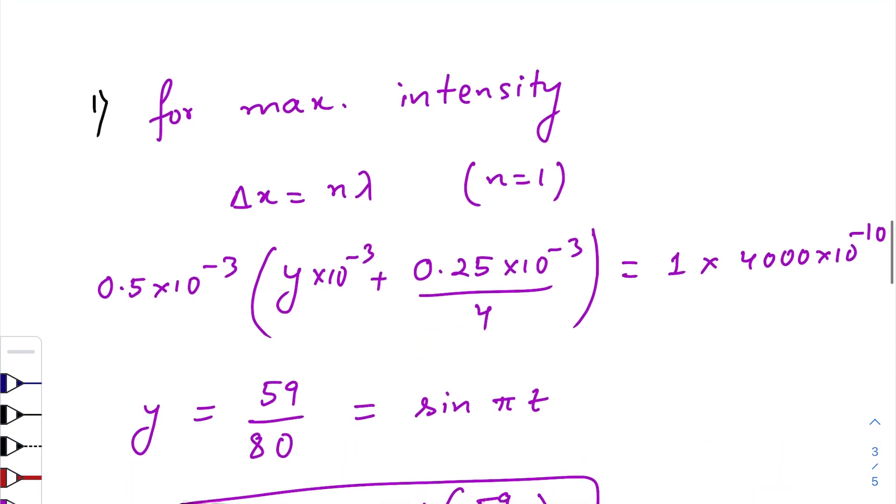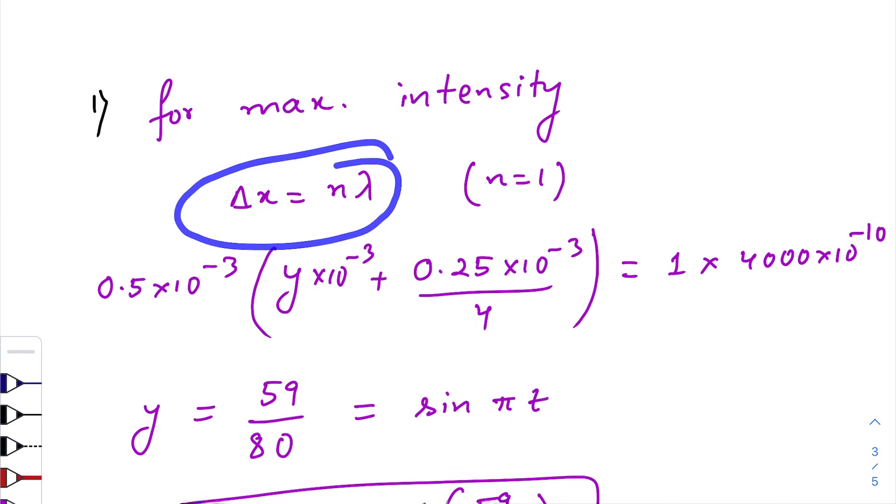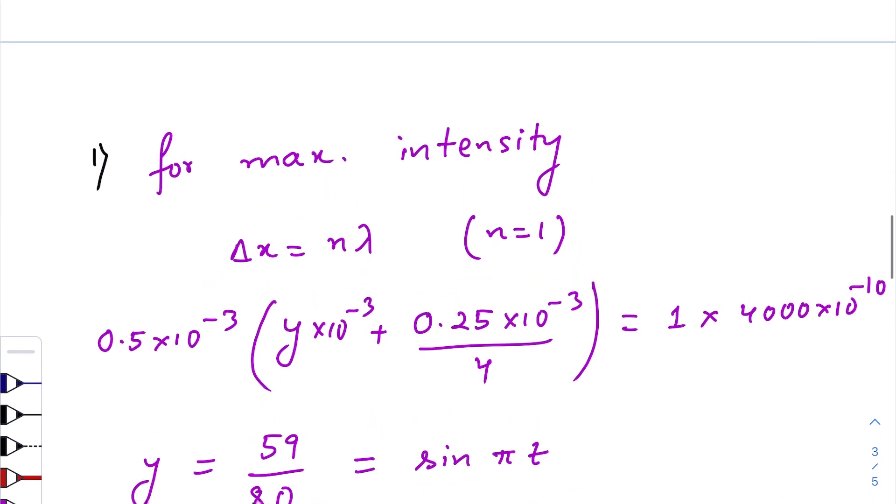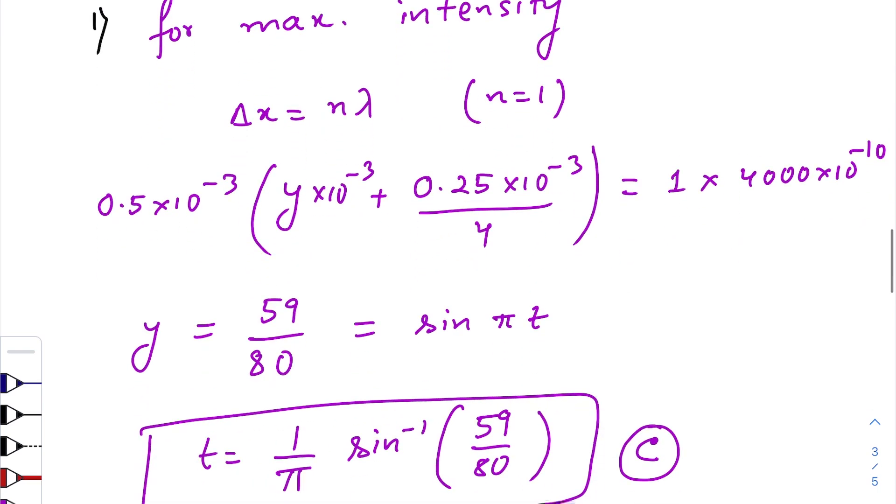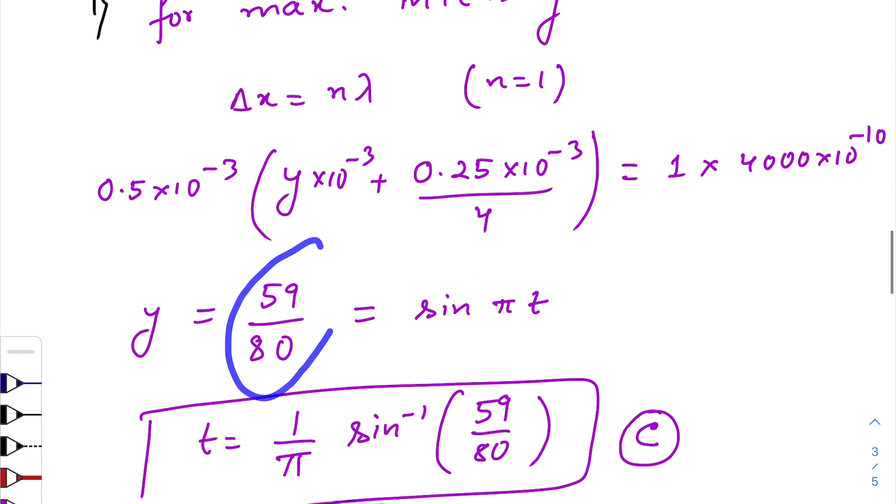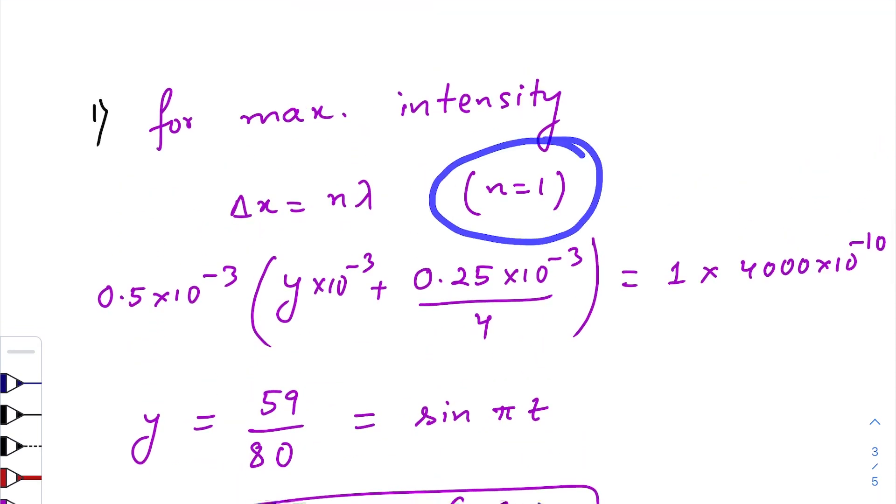Now for maximum intensity del x is n lambda. I have taken n equals to 1. Now you might be thinking that it could have been n equals to 2, 3, 4. Doesn't matter. We'll just check our answer with the options. If this matches, then it is fine. If it doesn't match, then its integral multiple should match with any one of the options.